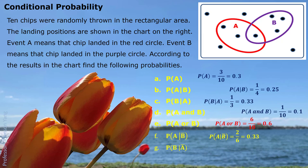Part G: P(B|Ā). This time we talk about if we know the chips are not in the red circle, how much chance is the chip in the purple circle? When we look at how many chips are not in the red circle — 3 belong to red, so outside should be 7. We focus on these 7 chips. Within these 7, how many belong to the purple circle? Three. So P(B|Ā) is 3 out of 7, approximately 0.43.